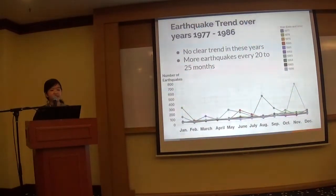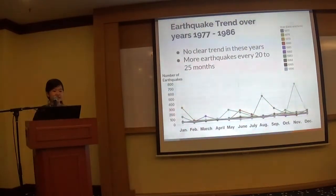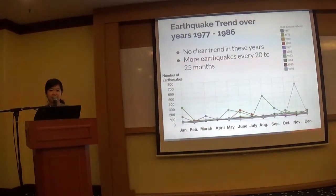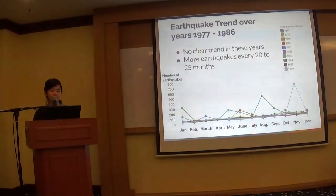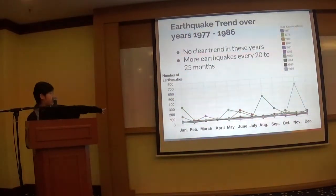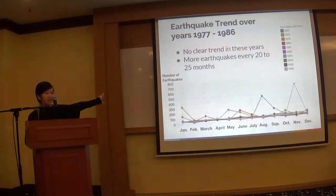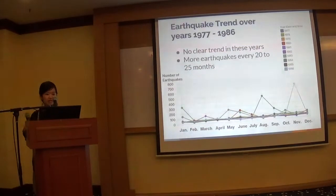Looking more specifically, this is the earthquake trend over the years 1977 to 1986. In these years, there's not much clear trend — the data is pretty scattered. But on average, there are more earthquakes every 20 to 25 months. Also, I'd like you to notice the vertical axis: in these years it only goes up to 800. As I move to later and more recent years, this vertical axis number will increase, meaning we're getting more and more earthquakes in recent years.